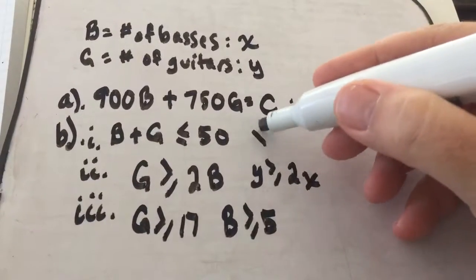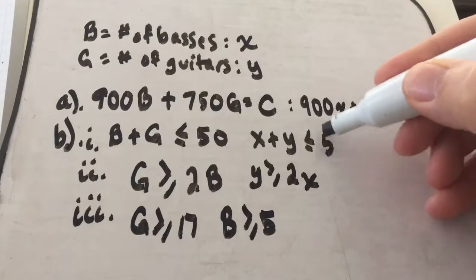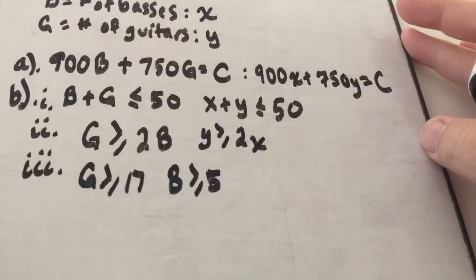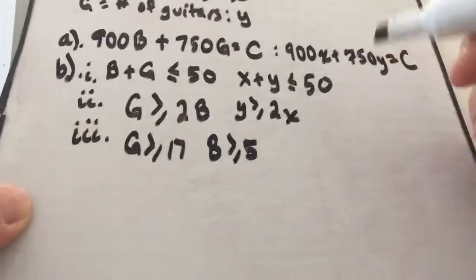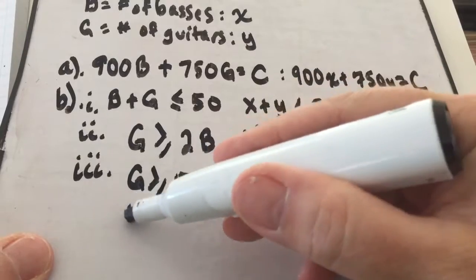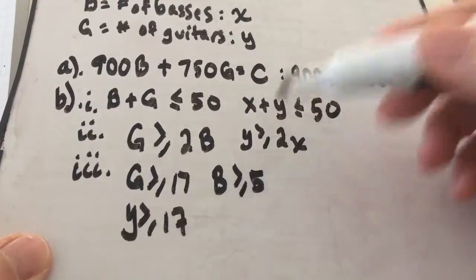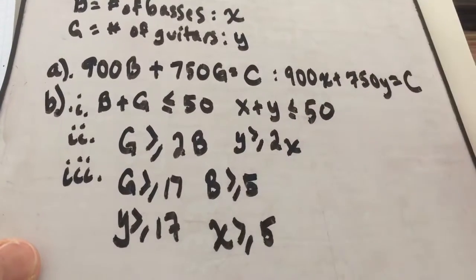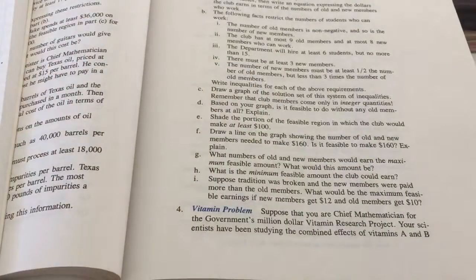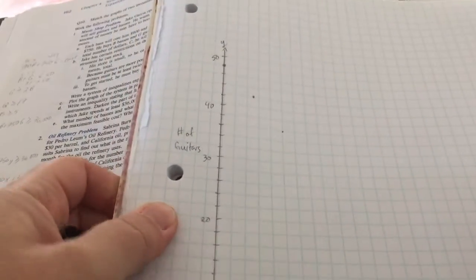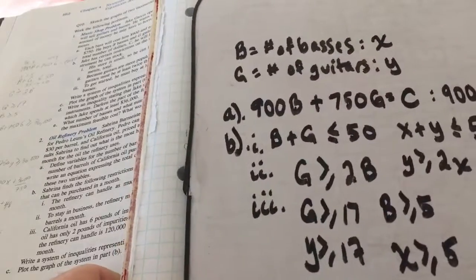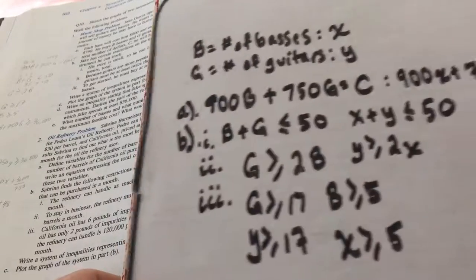To graph these inequalities I want to solve for Y. Constraint I becomes X + Y ≤ 50. Constraint II (G ≥ 2B) becomes Y ≥ 2X. The guitar minimum G ≥ 17 stays as Y ≥ 17. And B ≥ 5 becomes X ≥ 5. So the first graph is X + Y ≤ 50.